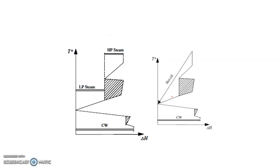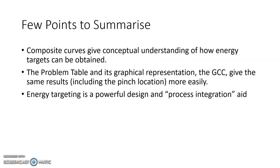Keep in mind that throughout this discussion, the amount of hot or cold utility required remains the same — it does not change — but the quality of that utility can be changed, thereby saving cost. To summarize: composite curves give conceptual understanding of how energy targets can be obtained; the Problem Table and its graphical representation, the GCC, give the same results including the pinch point, more easily. Energy targeting is a powerful design and process integration aid, and the GCC provides the liberty of deciding which utility is to be supplied at which temperature level, thereby effectively minimizing the cost of the required utility.